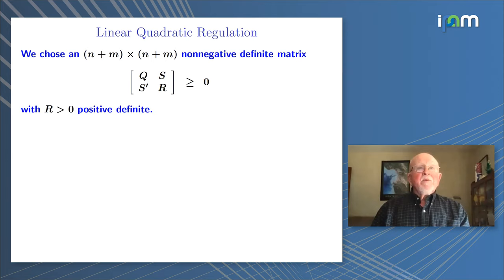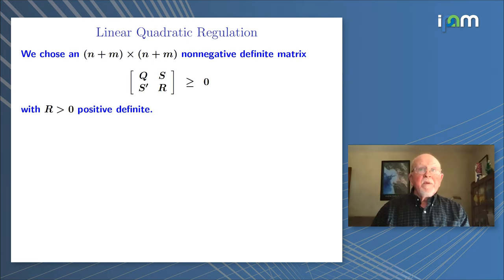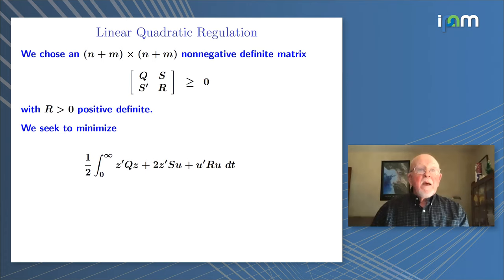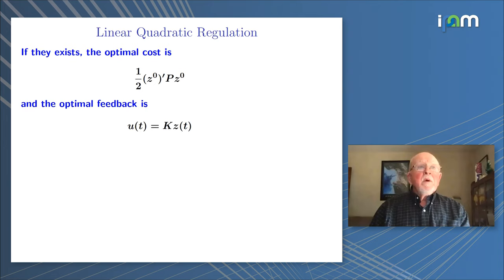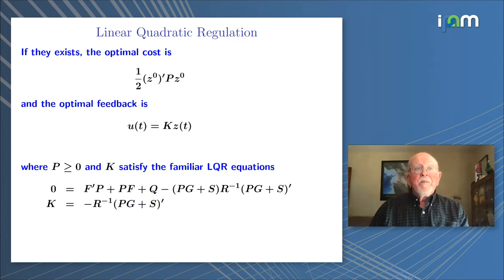So what is an LQR? We all know this, but let me just run through it again because we're going to see this several times in infinite dimensions. We choose an n by n, n plus m by n plus m matrix, such that the whole matrix is positive non-negative definite. And we minimize this quadratic form in Z and U. I'm using Z as a state variable because later I'm going to get to infinite dimensions and X is going to be a physical variable. We have linear dynamics and a given initial condition. We expect the optimal cost to be a quadratic form in the initial condition, and the optimal feedback will be a linear function of the current state. The P and K satisfy the familiar LQR equations.